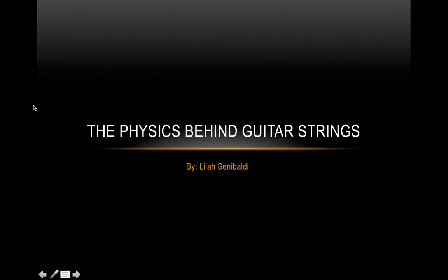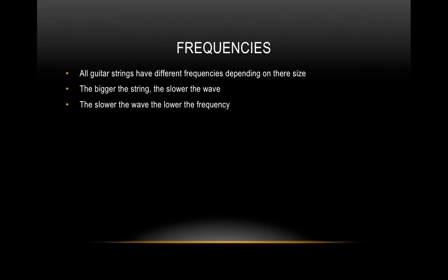Hello, my name is Lila Sanabaldi and I am going to be talking about waves and guitar strings. All of the strings on a guitar have different frequencies. This is because of their size. The bigger the string, the slower the wave, and the slower the wave, the lower the frequency. This is why larger strings are lower pitched.